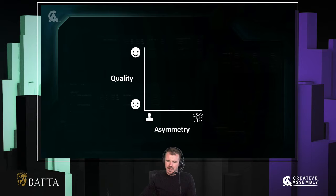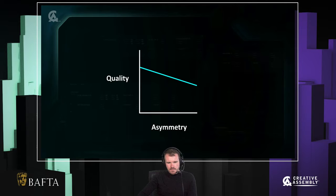Let's start with something simple. In this first graph, as asymmetry increases, quality is going down. The more asymmetric you make your game, the worse it gets. Obviously we don't want to be making this type of game — this game probably wants to be a symmetrical game and something in our development has gone wrong.